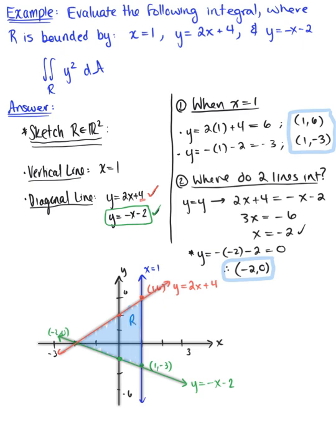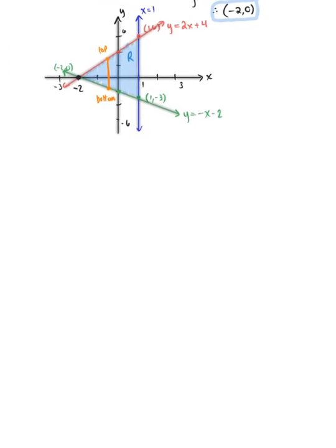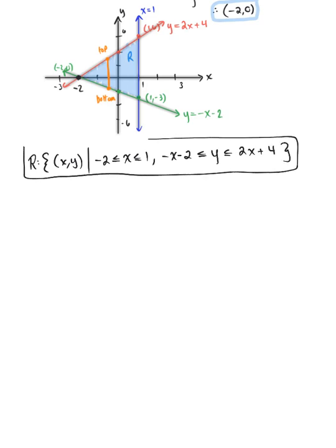We can see the x-bounds here: x varies from negative 2 to 1. So we can state our region of integration: R is the set of all points (x, y) such that x is greater than or equal to negative 2 and less than or equal to 1, and y is greater than or equal to minus x minus 2 and less than or equal to 2x plus 4. We're now ready to start integrating.